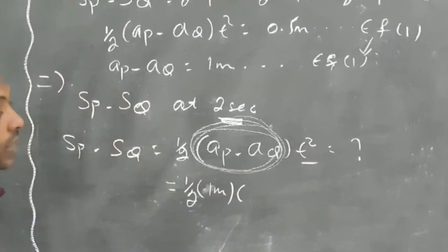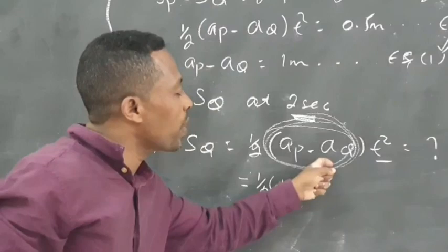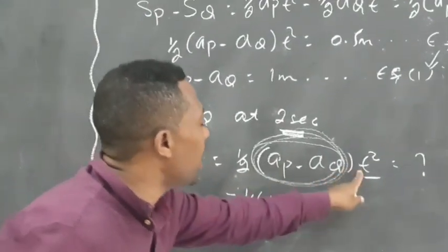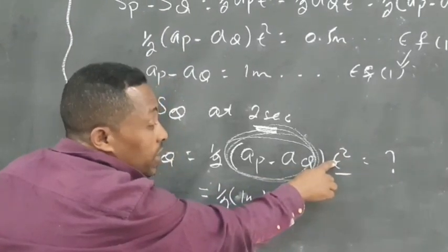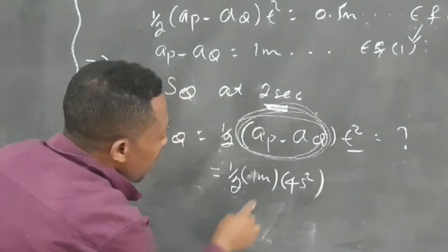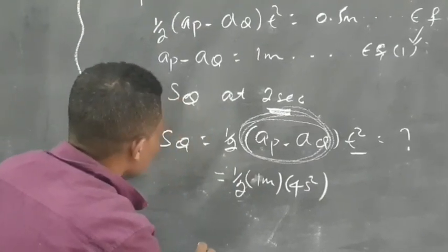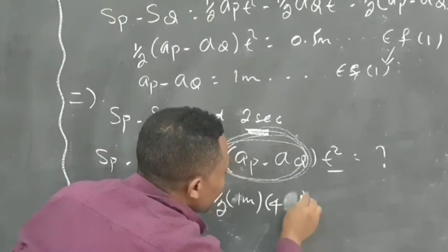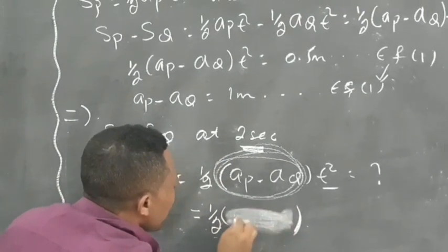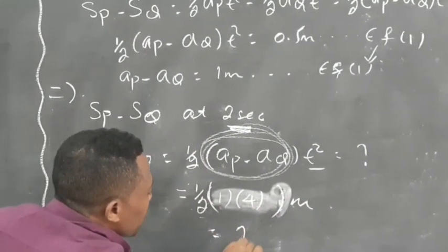But we know the value of A P minus A Q from equation 1 which is 1 meter. Just substitute the value of 2 seconds, and t squared becomes 4. This is easy. Don't worry about the units, so it should be in meters. 1 times 4 over 2 becomes 2 meters.